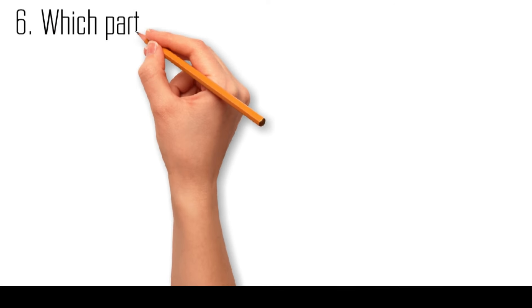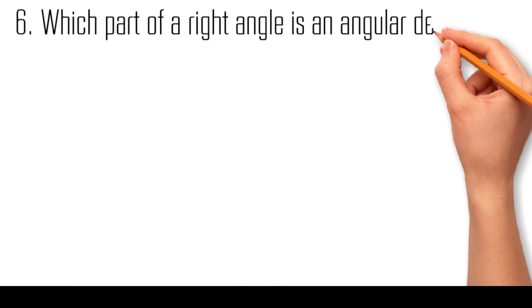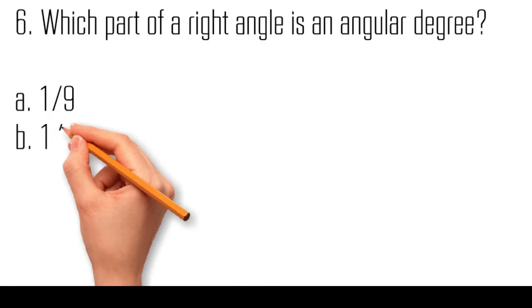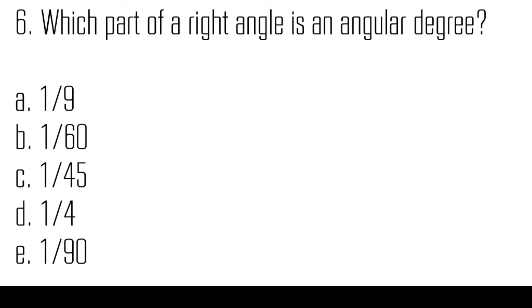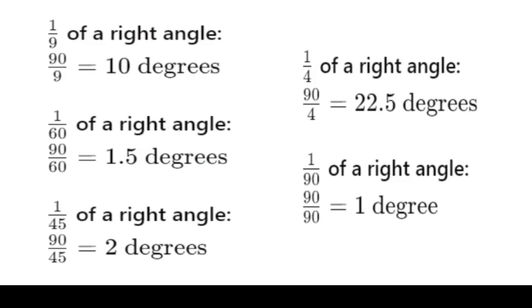Which part of a right angle is an angular degree? One-ninth, one-sixtieth, one-forty-fifth, one-fourth, one-ninetieth. The fraction that corresponds to one degree is one-ninetieth.